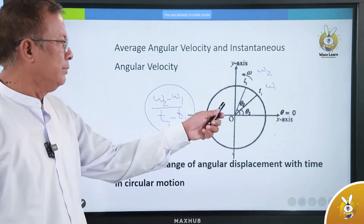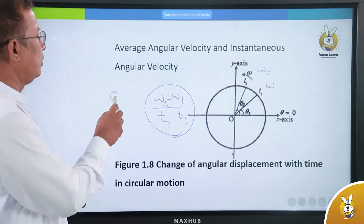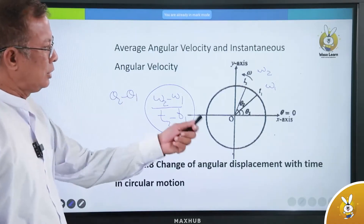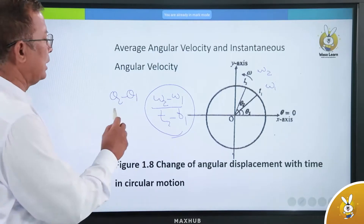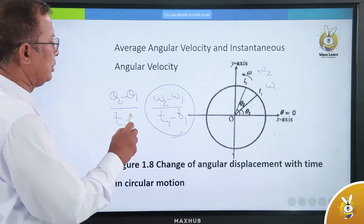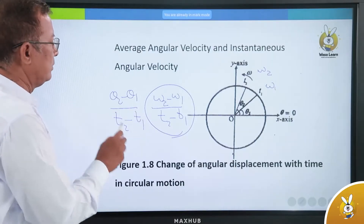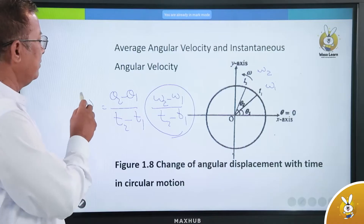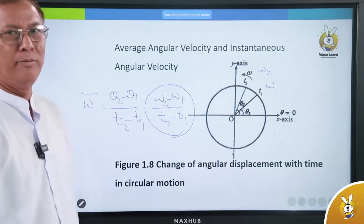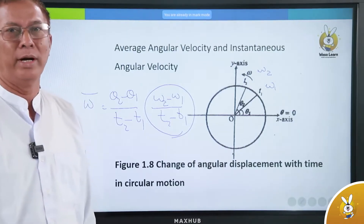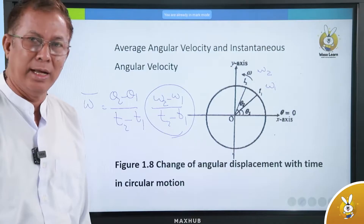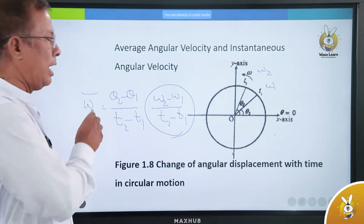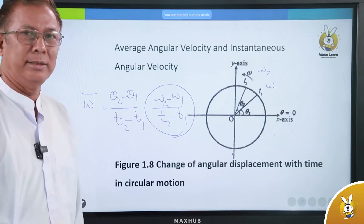Why are we saying T2 minus T1? That gives us T2 minus T1. In this way, we are taught that every angular velocity uses the formula omega bar.